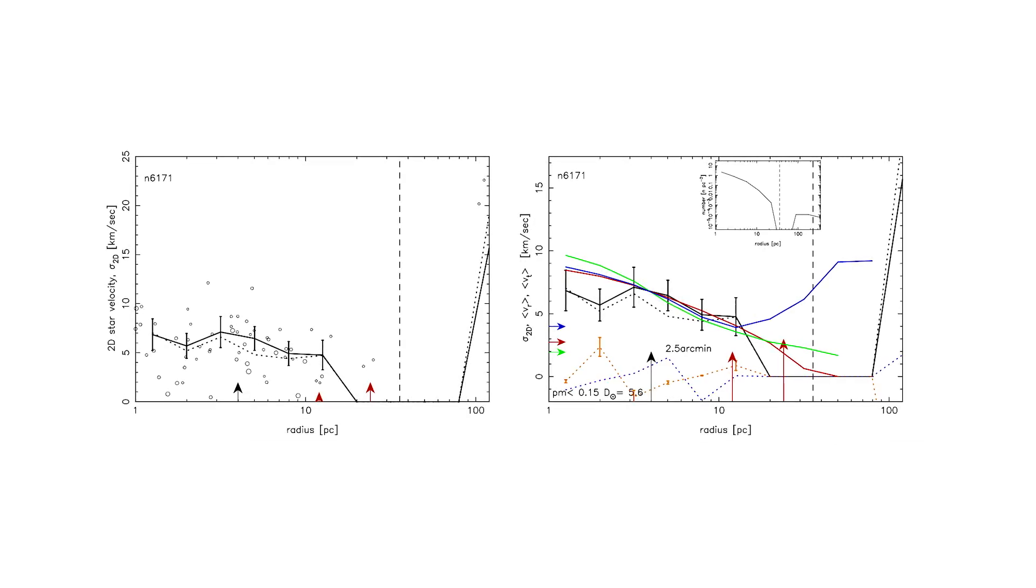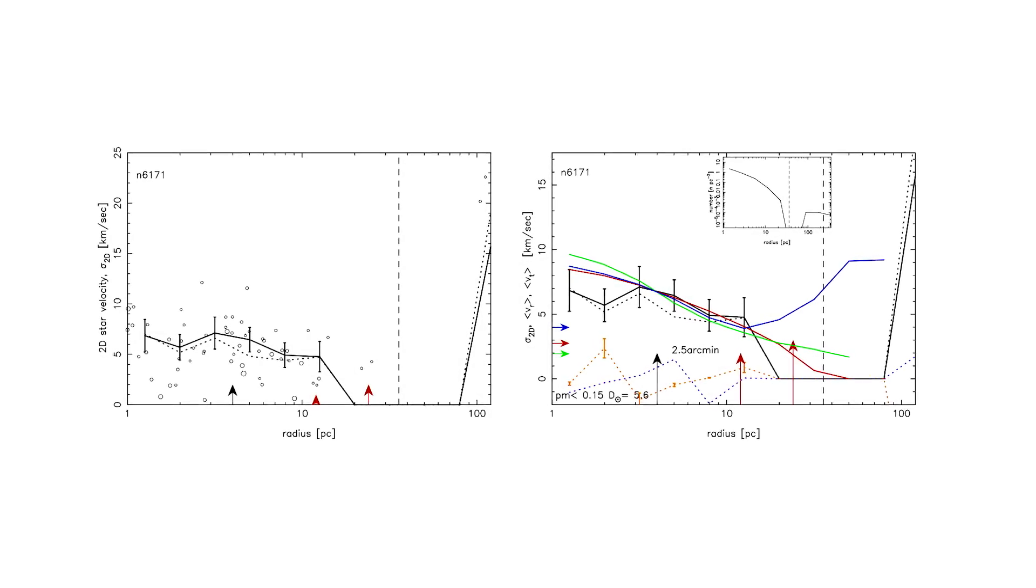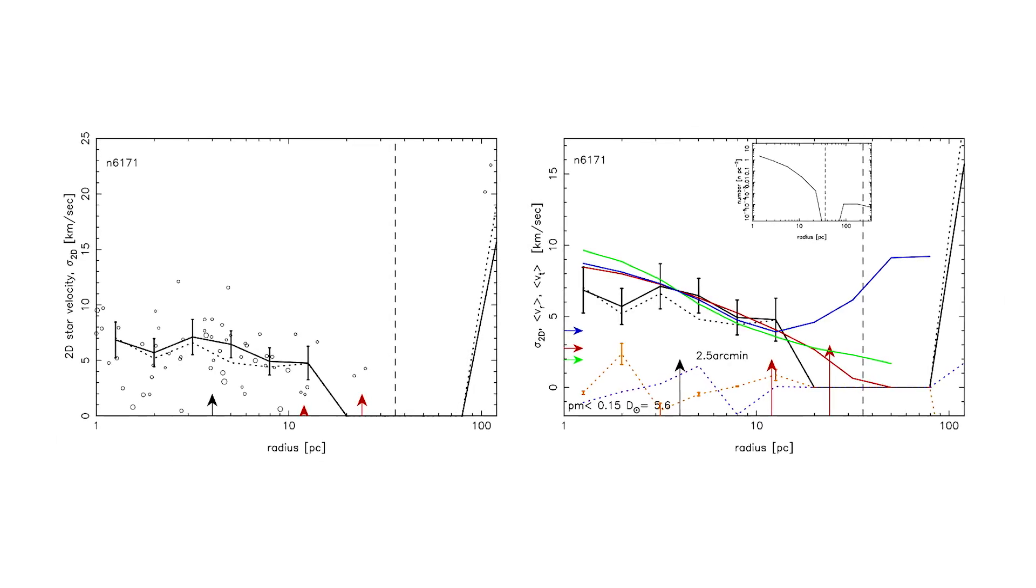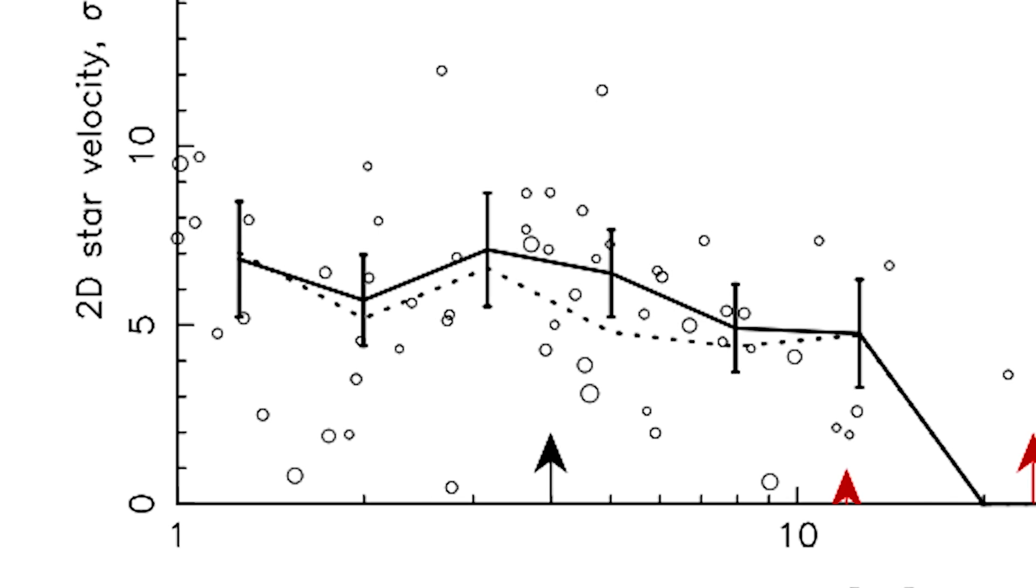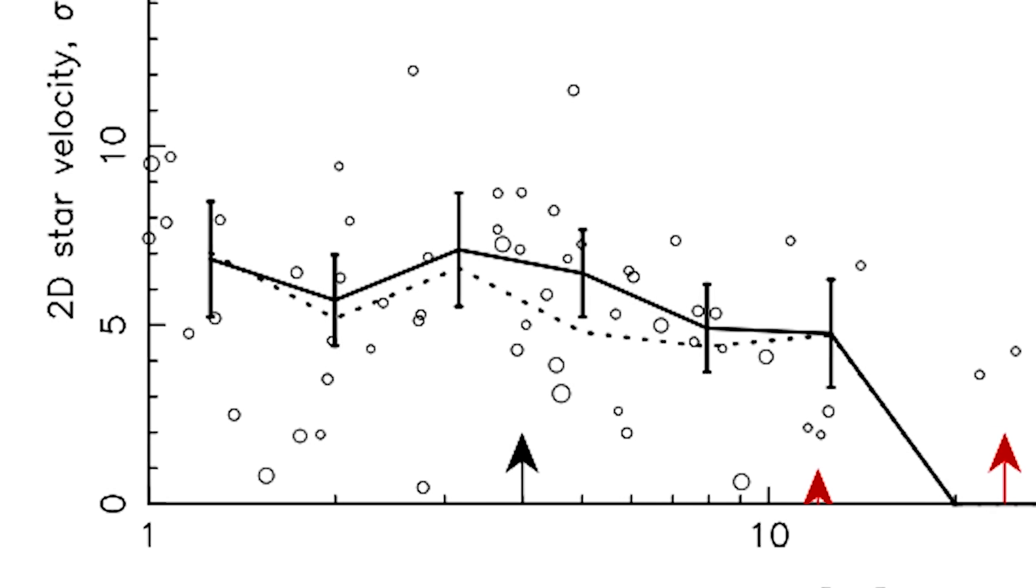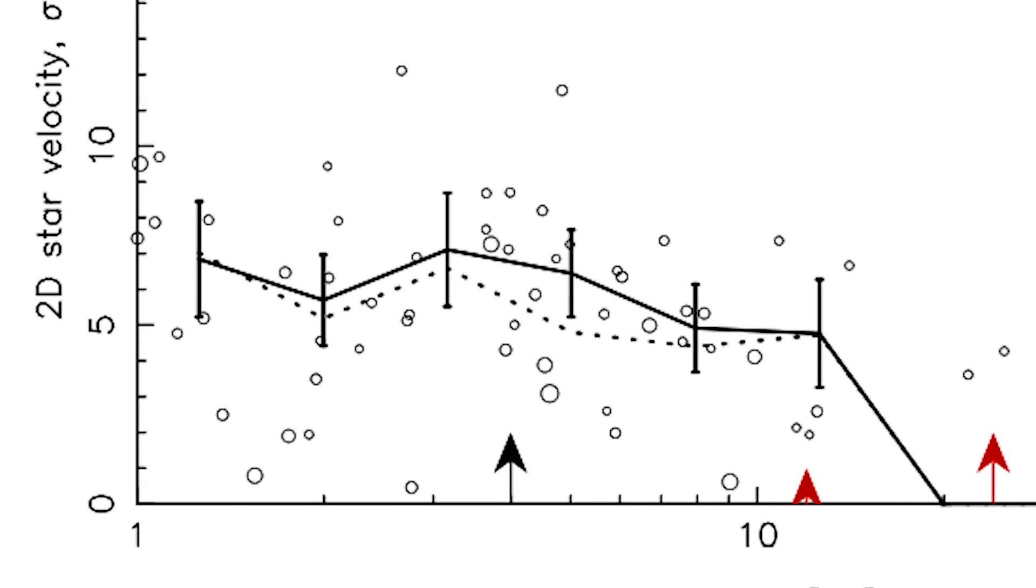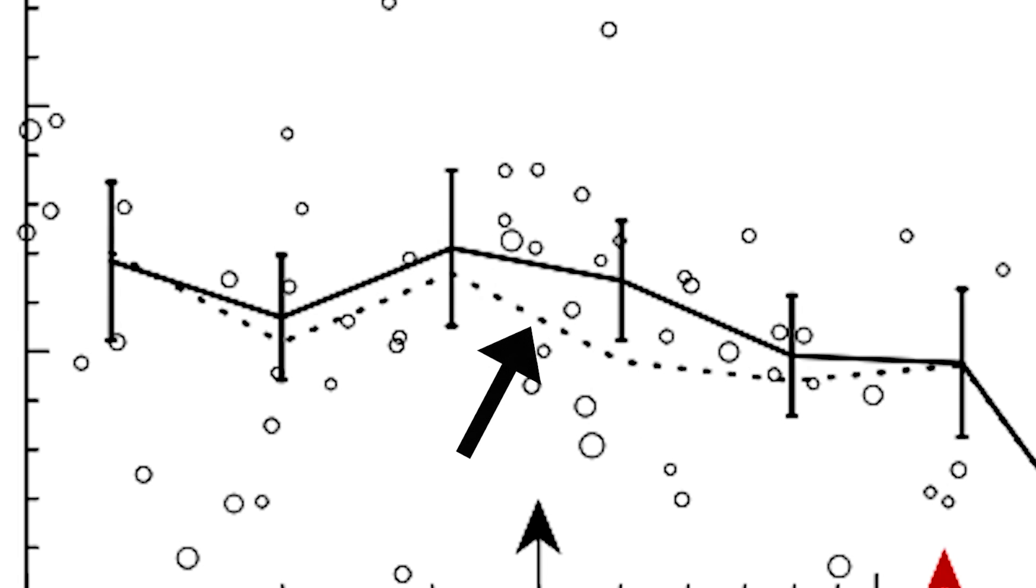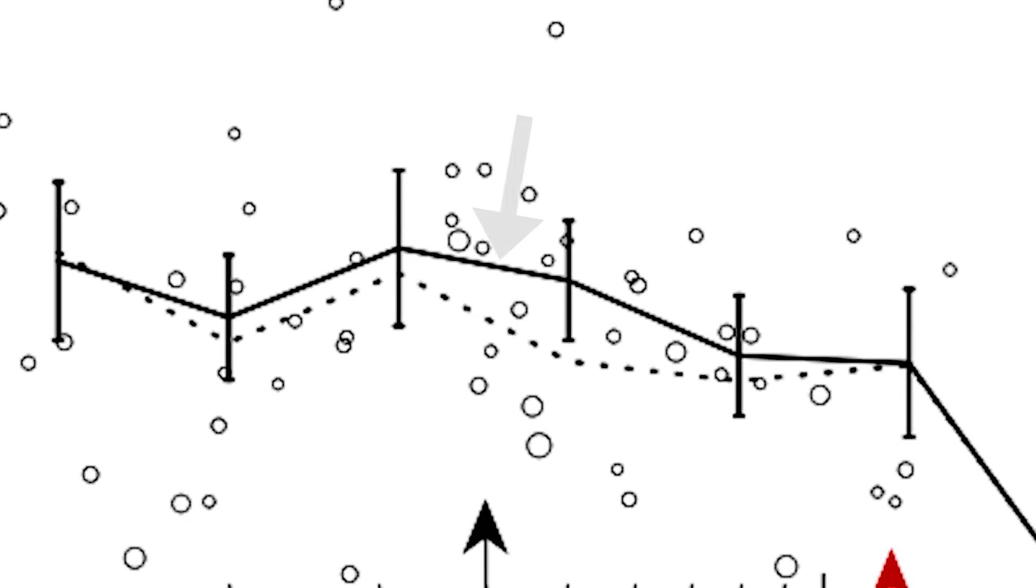So here is Messier 107. What we're seeing here is its velocity profile. So it's projected star velocities against their distance from the center of the globular cluster. Each circle represents a star in the globular cluster, and the size of the circle represents its weight to be fit. Some stars will have better measured velocities than others, so you'll want to have them contribute more to the fits. We've got a dotted line which shows its unweighted fit, and a solid line showing its weighted fit of the profile.